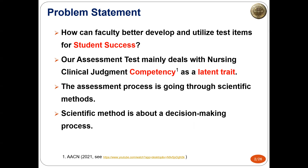The scientific method is about a decision-making process — evaluating things and then coming up with a decision. We believe that scientists have to make decisions based on the scientific method. The process of developing or modifying a test item is really similar to the one of formulating a scientific hypothesis.